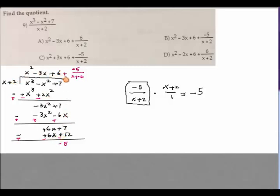What times x give you six x would be six. Six times x would be six x. And you multiply this one to twelve. Now, you will see how I got the remainder of negative five here.